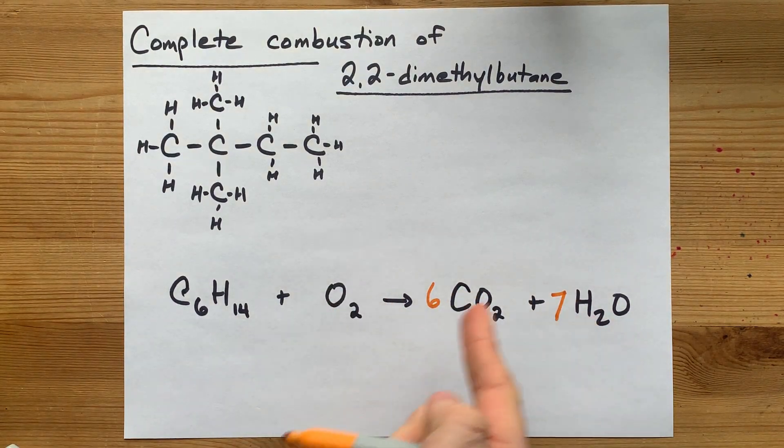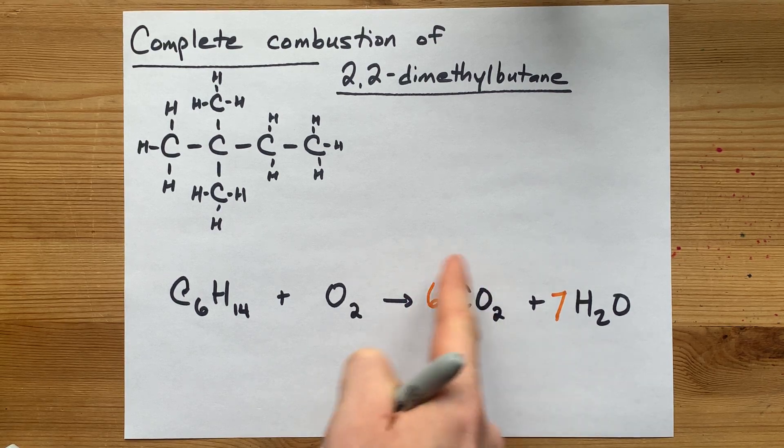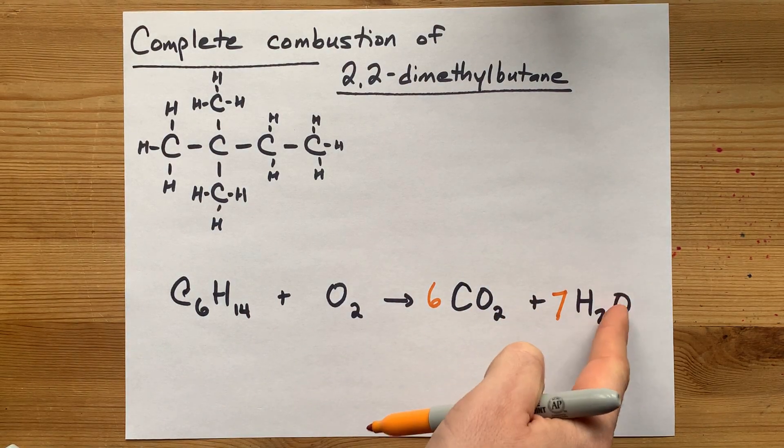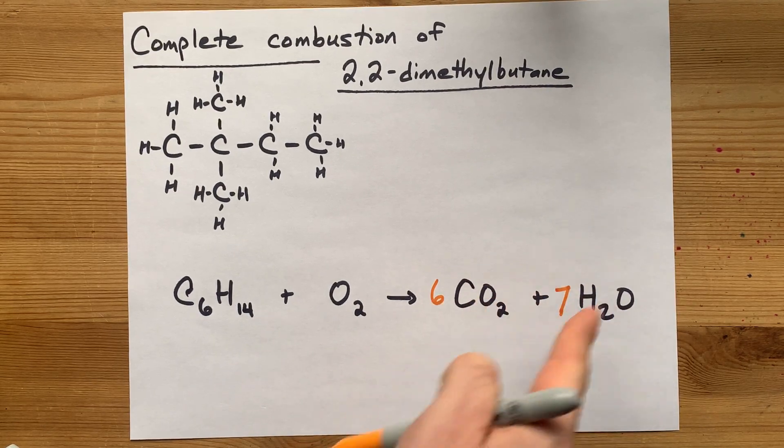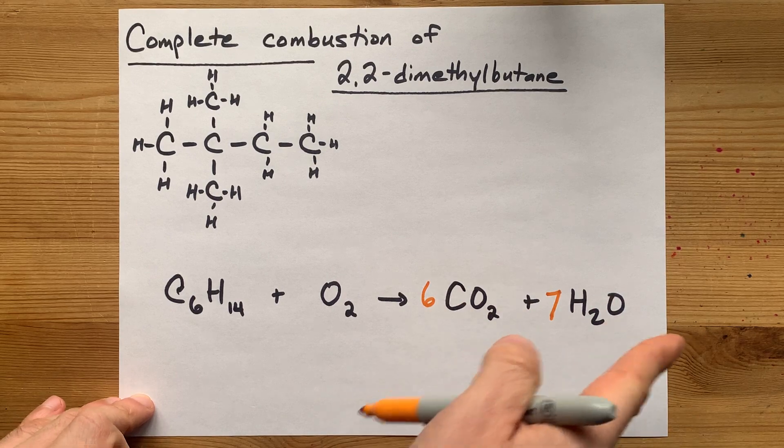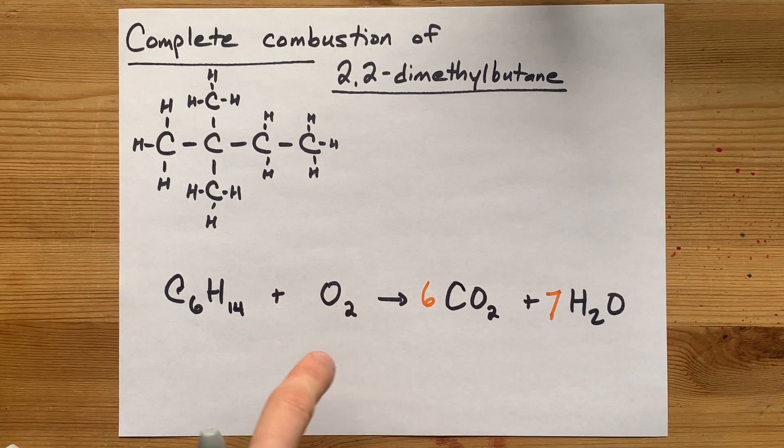Now I count the oxygens on the right. Six times two is 12 oxygens here, plus seven times one is seven. Twelve plus seven is 19 oxygens on the right side. Oof, that's an odd number. Oxygen only comes in packs of two.